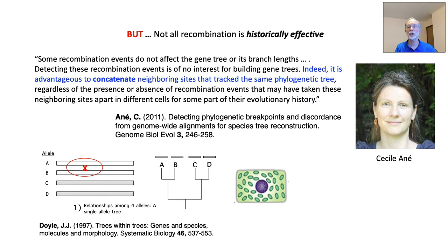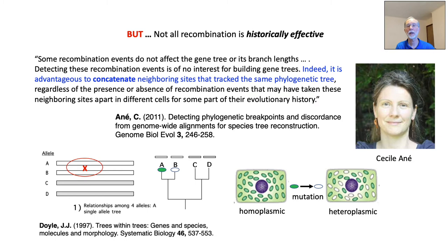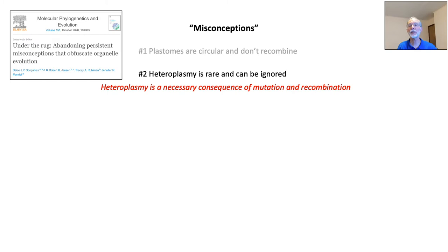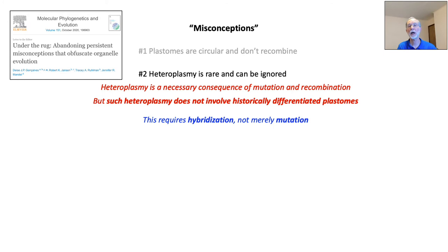And this is exactly the situation when a mutation occurs in a plastid within a plant cell. I show this here as a plastome within a green plastid experiencing a mutation, transforming the green plastid to white. The alleles will be sisters on the phylogeny, and so recombination between them, occurring within the plastid where the mutation occurred, will not affect the phylogeny. What a mutation in a plastome within a nucleoid within a plastid will do is to make a homoplasmic cell heteroplasmic. Clearly, heteroplasmy is not rare — it is a necessary consequence of mutation and recombination. But heteroplasmy caused by mutation in a plastid does not involve historically differentiated plastomes and does not produce incongruence.